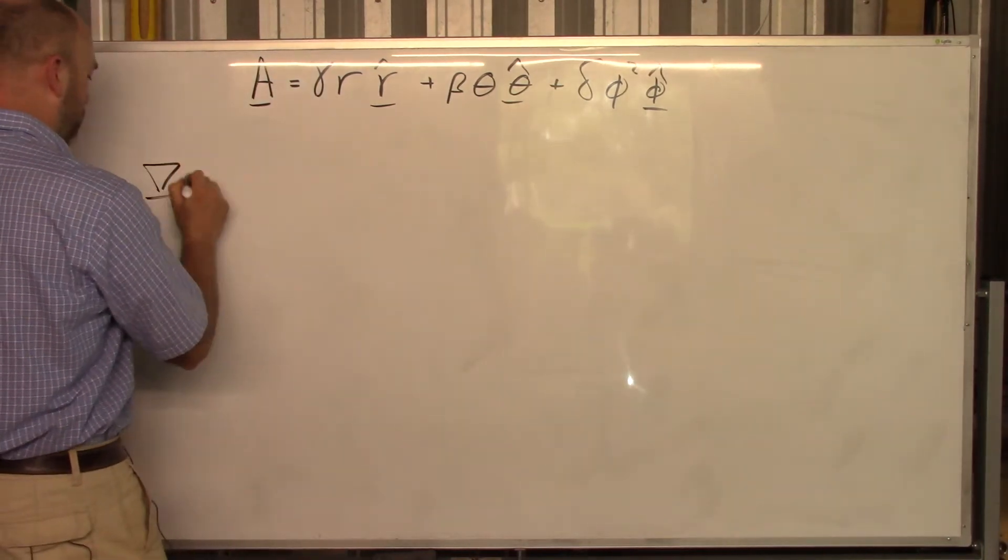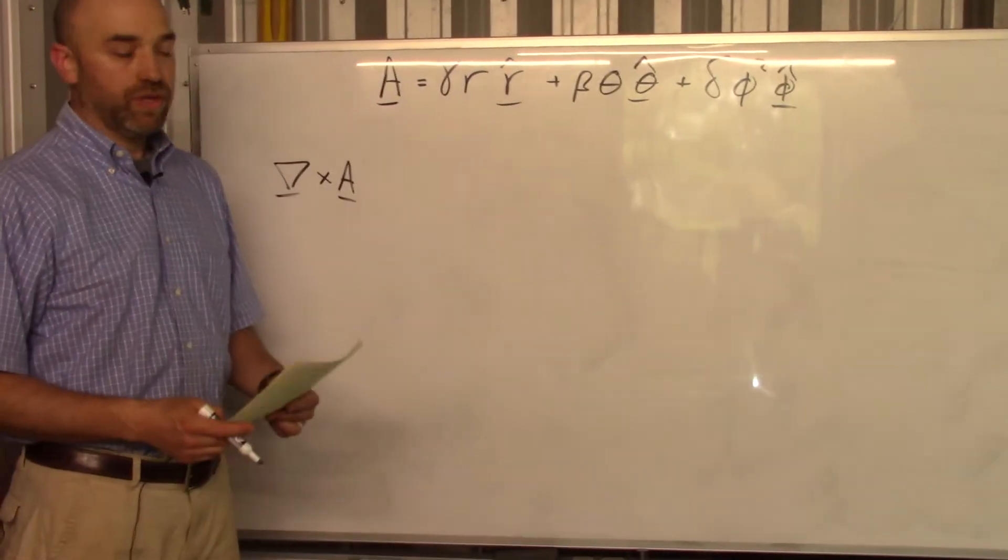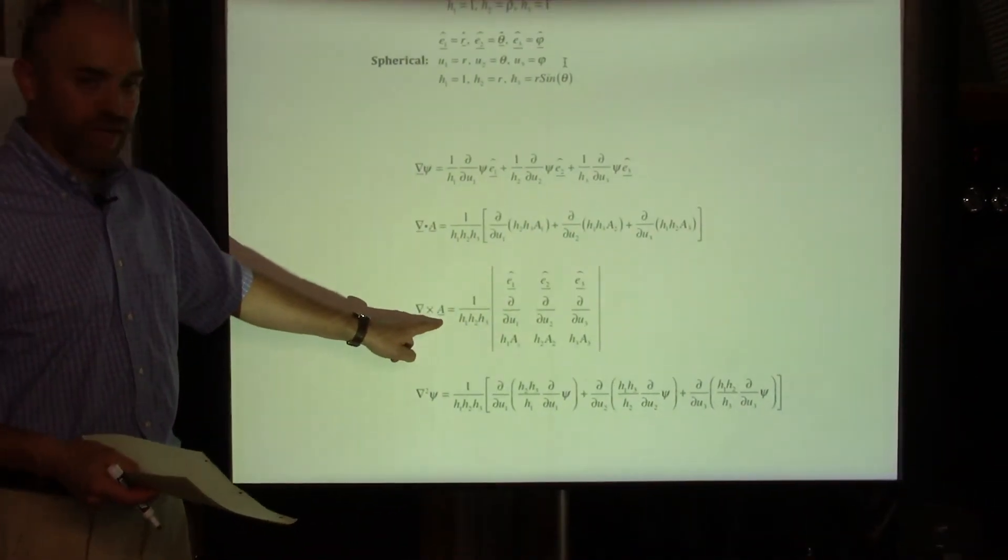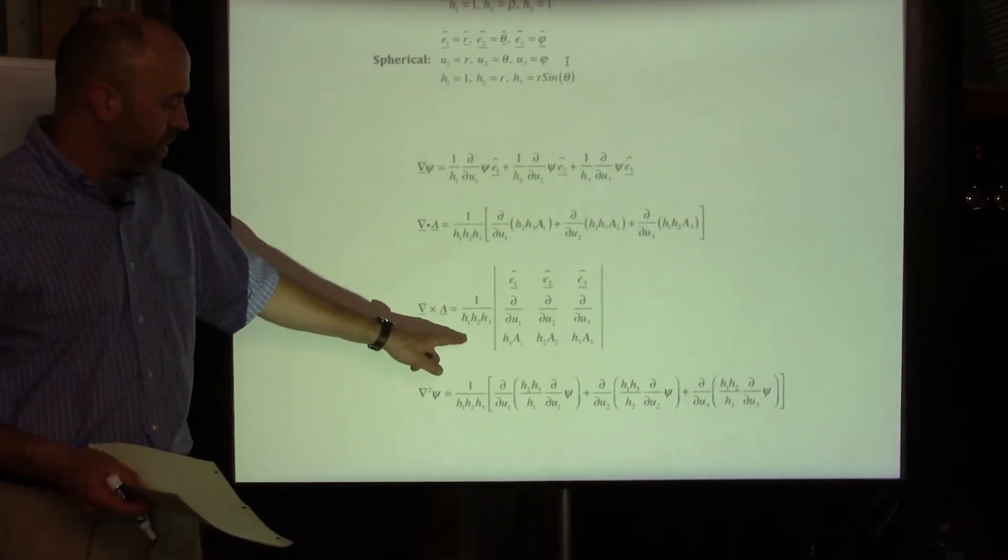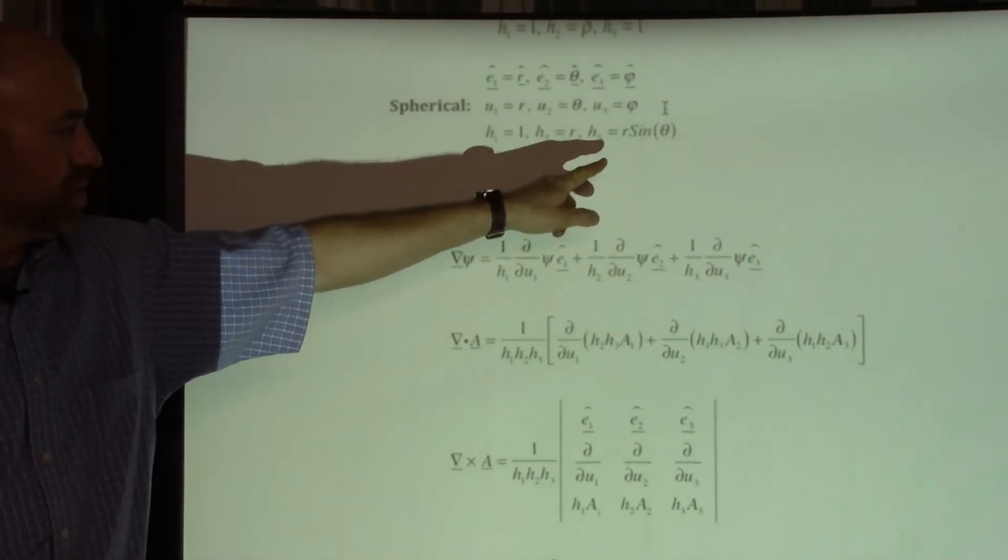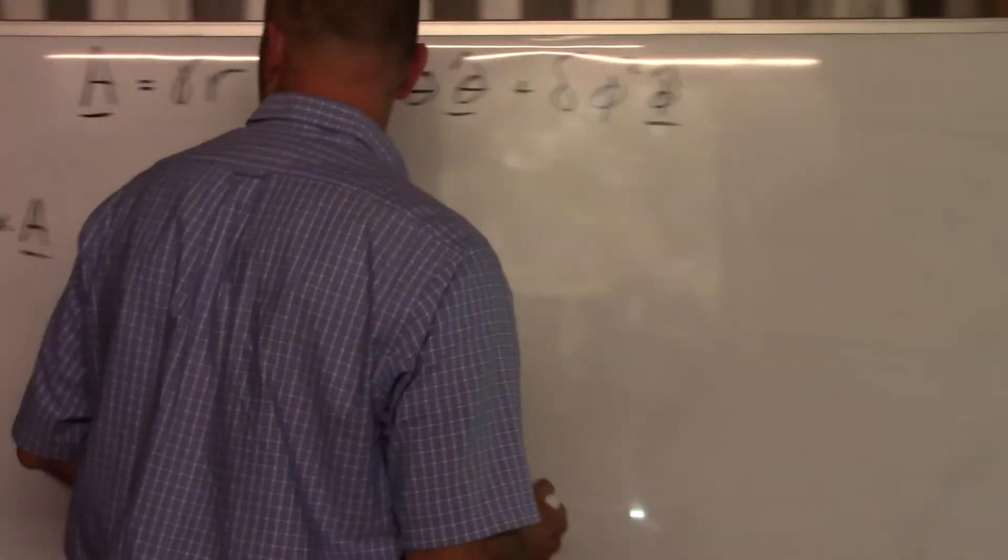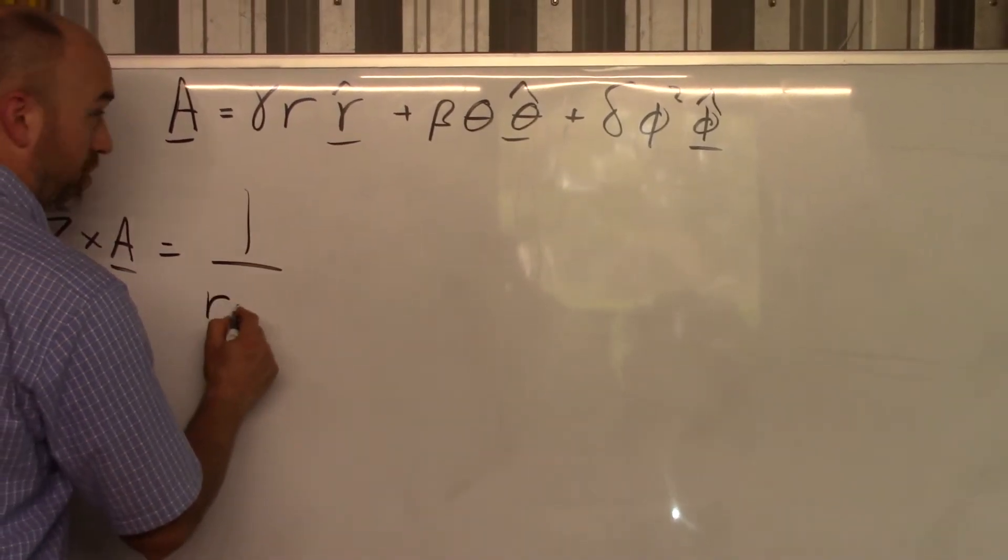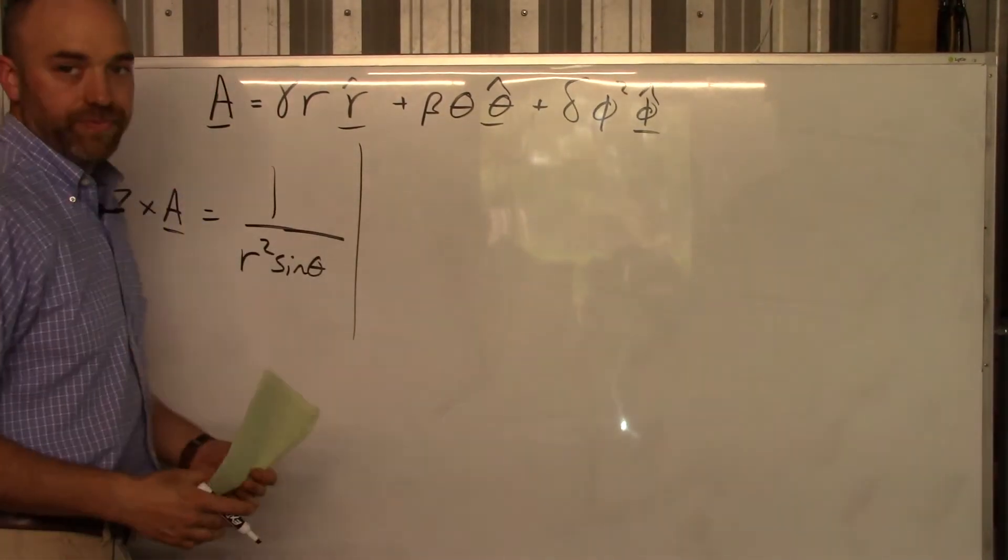And the question is, what's the curl of A, which means of course del cross A. So following this thing over here, in order to find the curl of A, step one is divide one by h1, h2, and h3. And you say, what's h1, h2, and h3? Well that goes depending on which coordinate system you're using. For spherical, this is what it is. h1 is 1, h2 is r, and h3 is r sine theta. So you just plug those in down there. So the curl of A is going to be 1 over 1 times r times r sine theta. Okay, that's step one.